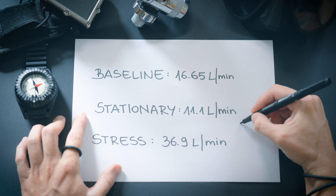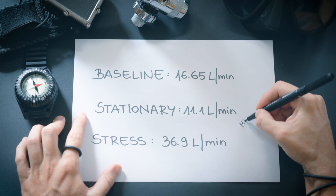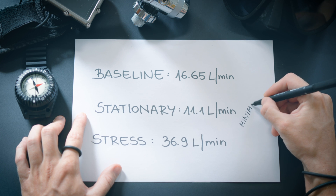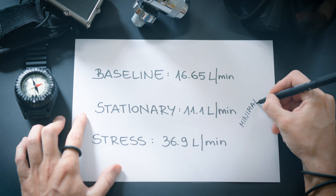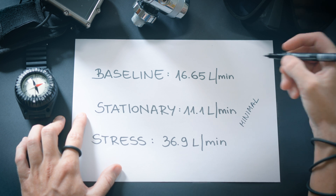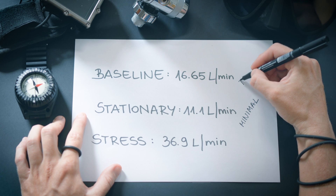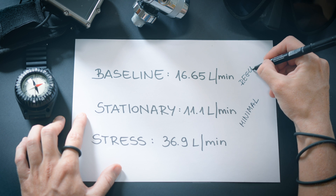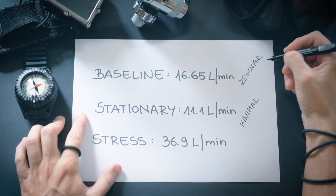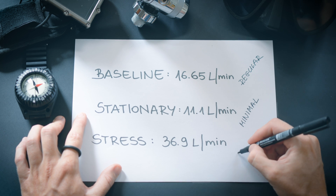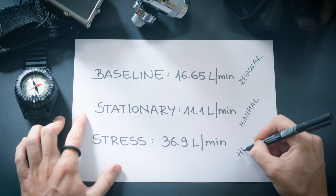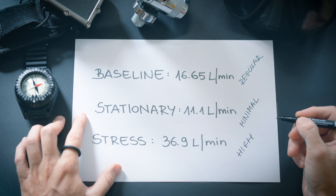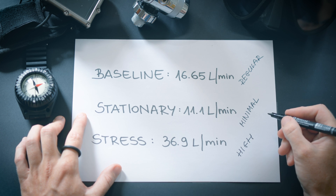You can observe the difference in air consumption across the various methods. Clearly, when you remain still, your air consumption is minimal. When swimming at your regular pace, you consume a slightly greater amount of air. However, when you are exerting yourself against a current, your air consumption increases significantly.